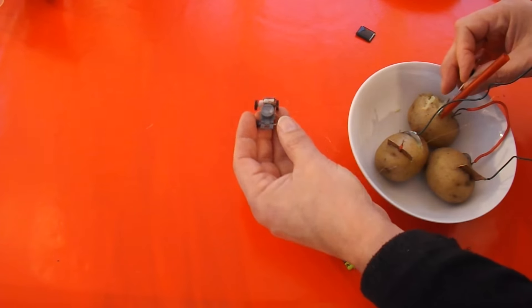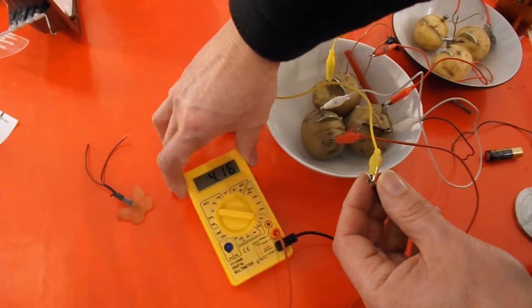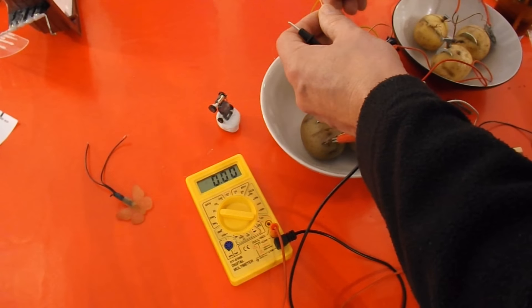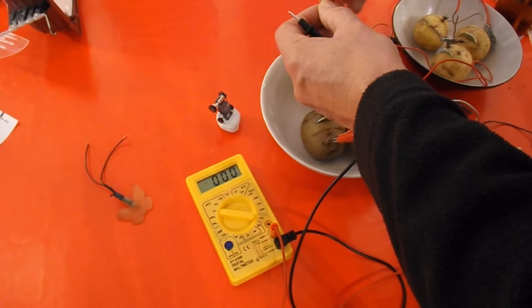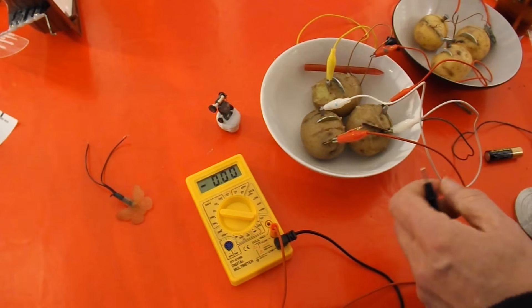So this is now the same potatoes with magnesium loops in them instead of the zinc plated washers. 4.14 volts. 4.15 volts. So plenty of volts. 5.24 volts. Still nothing happens.